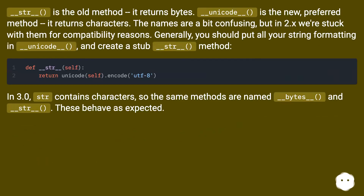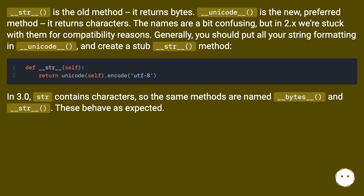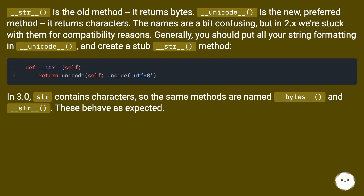__str__ is the old method — it returns bytes. __unicode__ is the new, preferred method — it returns characters. The names are a bit confusing, but in Python 2.x we're stuck with them for compatibility reasons. Generally, you should put all your string formatting in __unicode__, and create a stub __str__ method.